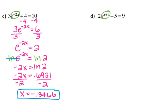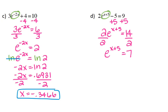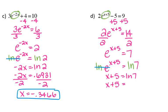Do the same thing with letter d. Start by adding 5 to both sides: 2e to the x plus 5 equals 14. Divide by 2: e to the x plus 5 equals 7. Take the natural log of both sides. I'm using the natural log instead of a regular log because natural logs and e's will always cancel out, saving us a step. So natural log and e cancel, giving x plus 5 equals natural log of 7. Natural log of 7 is 1.9459. Subtract 5 from both sides, that gives me negative 3.0541.